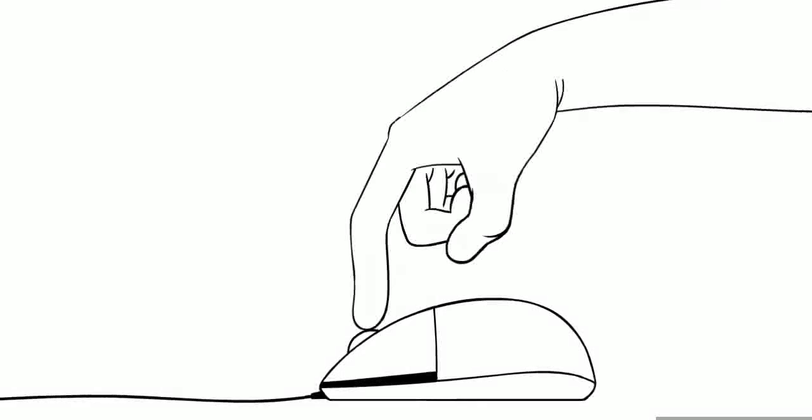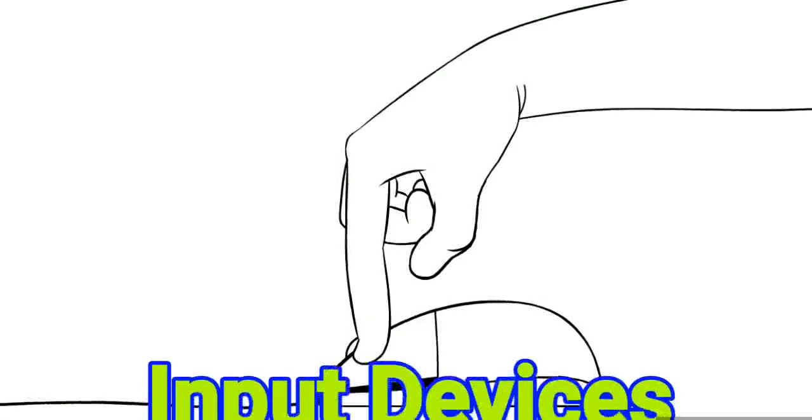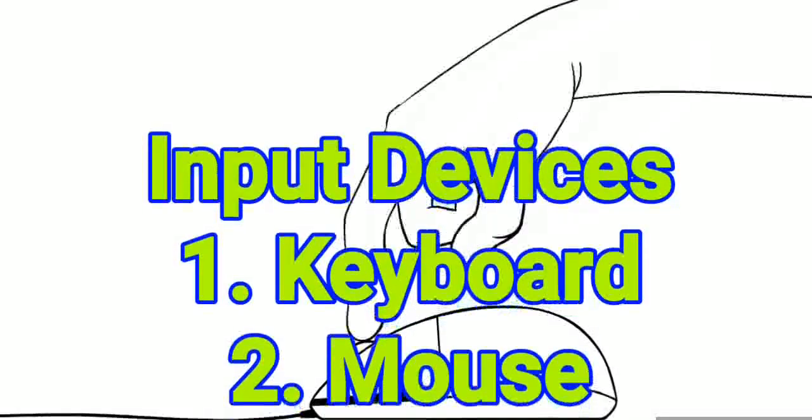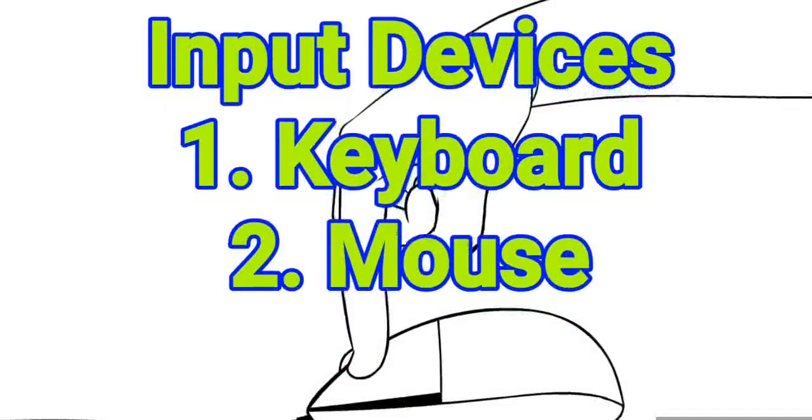Now let us discuss the input devices. The first one is keyboard and the second one is mouse. In a computer the keyboard and mouse are used to enter data and instructions, hence they are input devices. The keyboard is used to enter data or give instructions to the computer. It is connected to the CPU box with a cable — it is a flat rectangular board with more than a hundred keys on it.